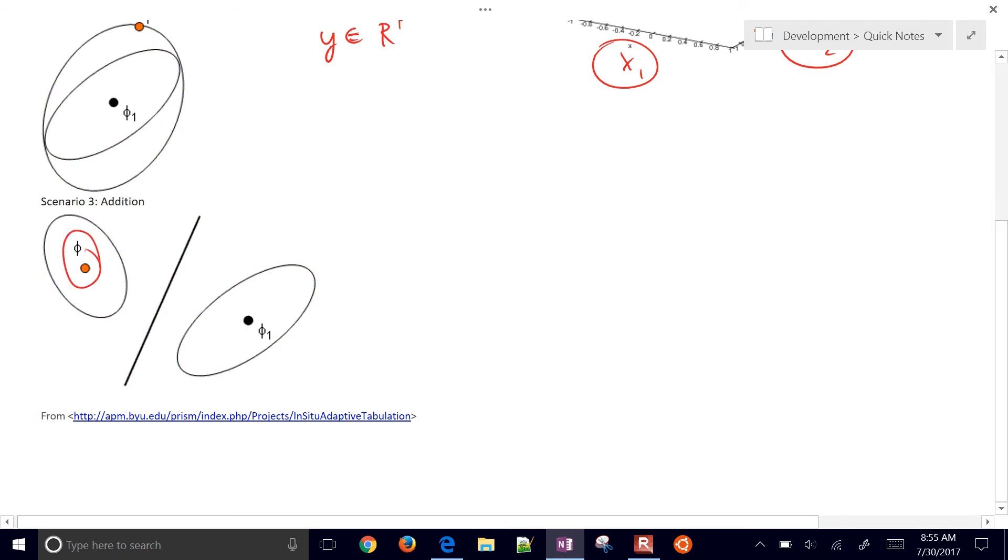We have a ISAT record here and we have a new point that's requested here. So it looks for if this is going to be within the region of accuracy. If it's outside that region, it's going to go ahead and create a new region. And if the region cannot be expanded, it's going to create this new record right here with an ellipsoid that bounds the error.